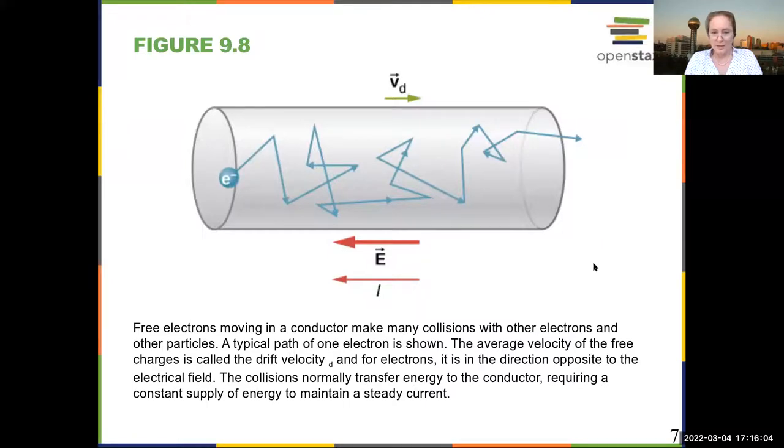So they're not going to follow in a straight path. They're going to come in, collide off of an electron in the material, bounce back, but on average, they're going to slowly move towards the other side of the wire. We measure how fast that happens as a drift velocity. The drift velocity is dependent on both the electric field and the material.